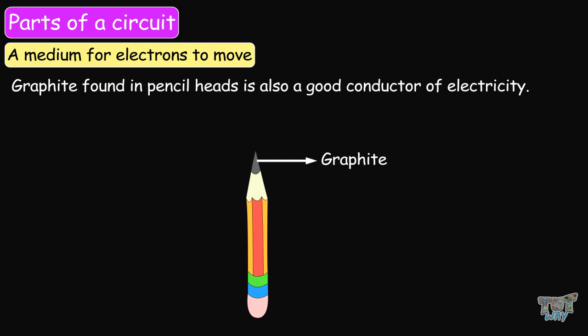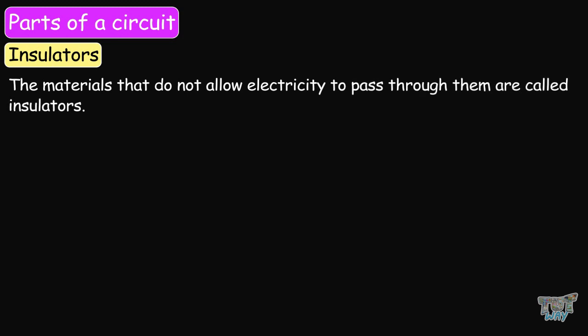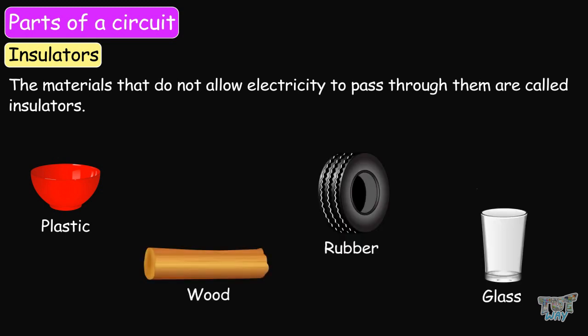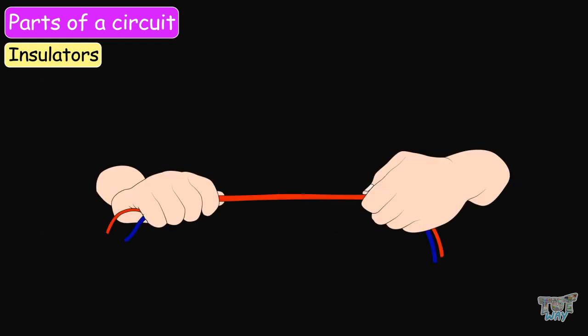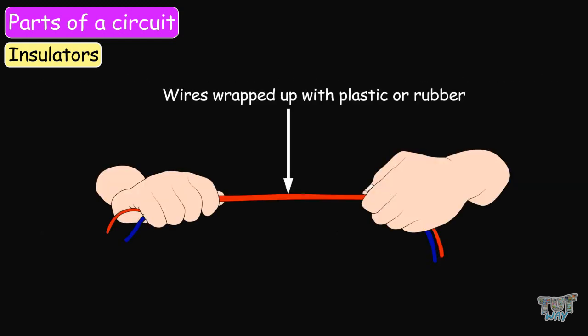Now we know what conductors are. We should also know about insulators — materials that do not allow electricity to pass through them. Plastic, wood, rubber, and glass are all types of insulators; they do not allow electrons or electricity to pass through them. This is why you see wires wrapped up in plastic or rubber, so that we don't get a shock when touching them.